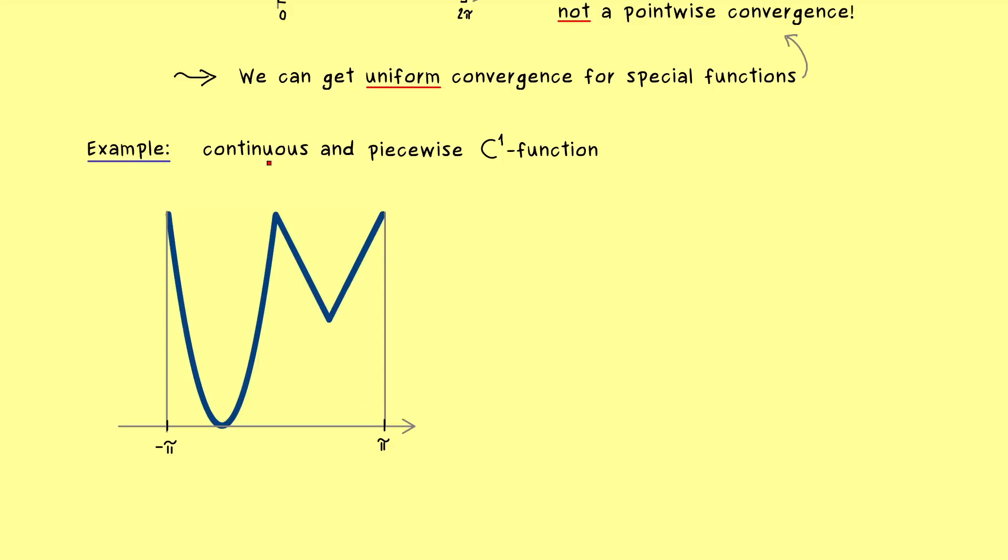However, these are only finitely many points and if we ignore them, then we have a continuously differentiable function on the separate intervals. Let's say that this is the graph of the function from minus π to plus π and that we extend it to π periodically. However, this extension has to be a continuous function, which means that the value at π should be the same as the value at minus π, and of course also inside the interval it should not make any jumps. So there we have it, this is the graph of our function f.